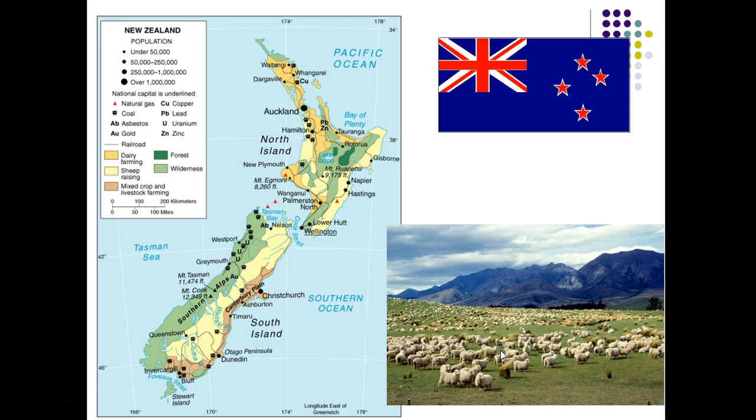Shifting gears to talk about New Zealand: New Zealand and Australia share a lot in common — they were both settled by the British — but we'll also see some significant differences. New Zealand is a much smaller land mass, entirely in the southern hemisphere, so their seasons will be opposite of ours. This is a tectonically active land mass, as we shall see in a few minutes.